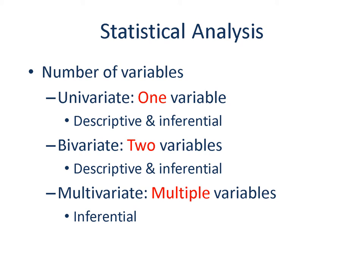Another dimension to consider is the number of variables you need to include in your analysis. For example, if your research question is to understand the nature of one dimension, such as the level of overall student satisfaction with the professional development program, then you have only one variable to analyze. In this case, it will be a univariate statistic that you will estimate. On the other hand, if your research question focuses on the relationship between two factors, you will need to estimate a bivariate statistic.